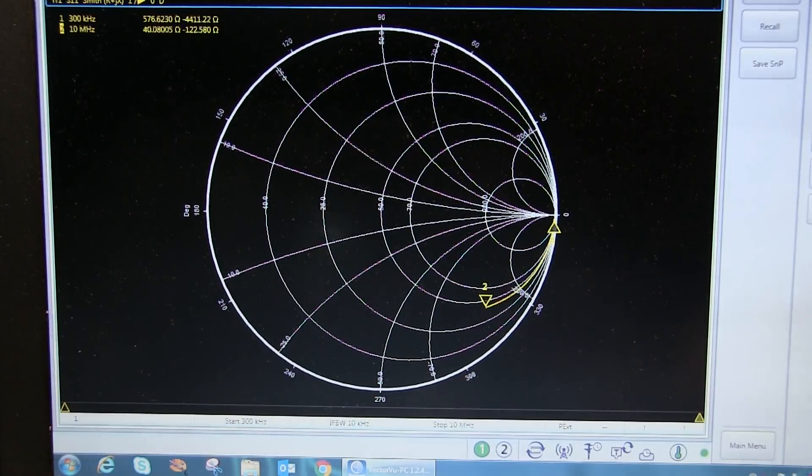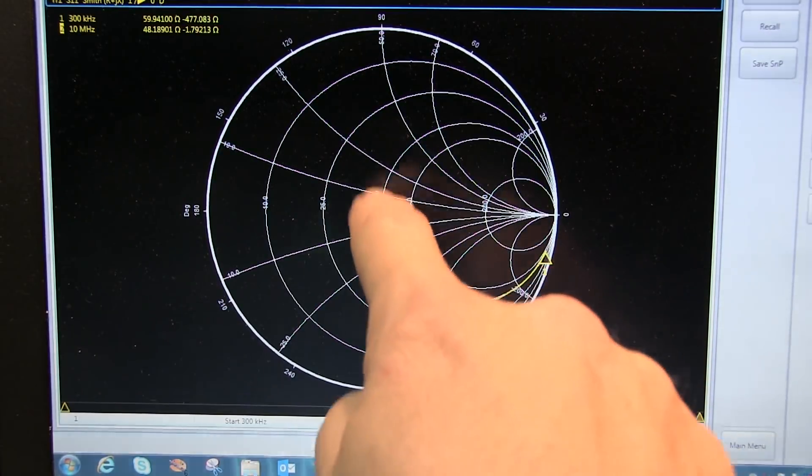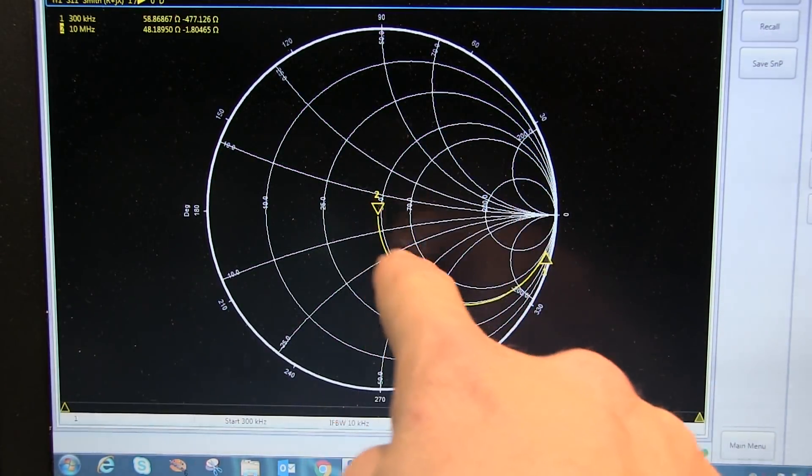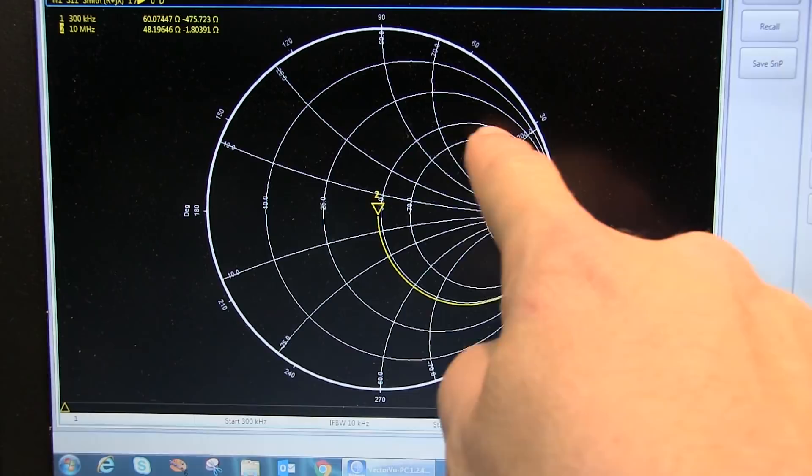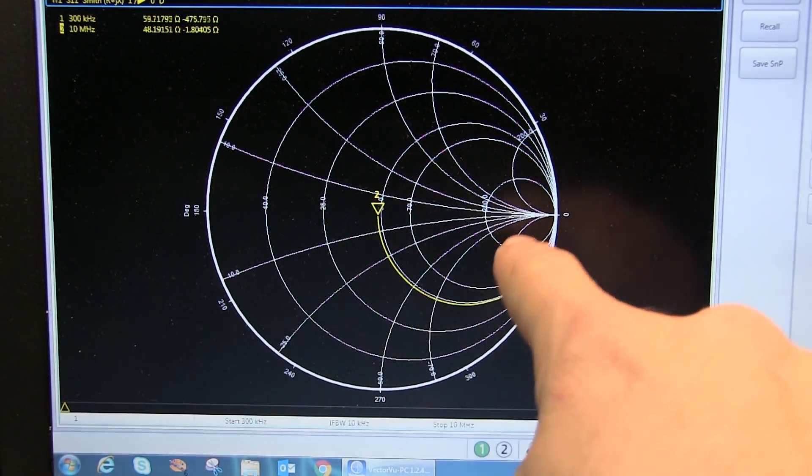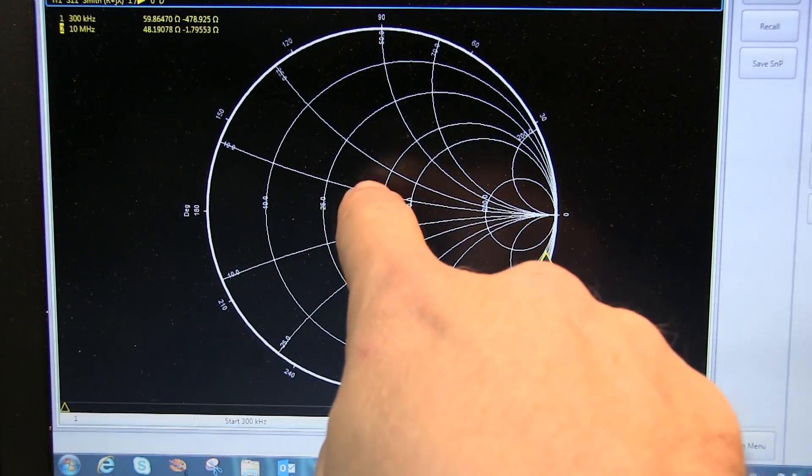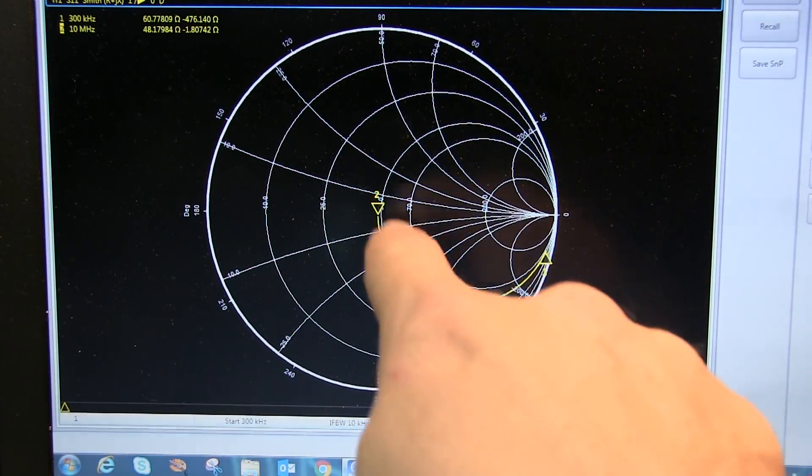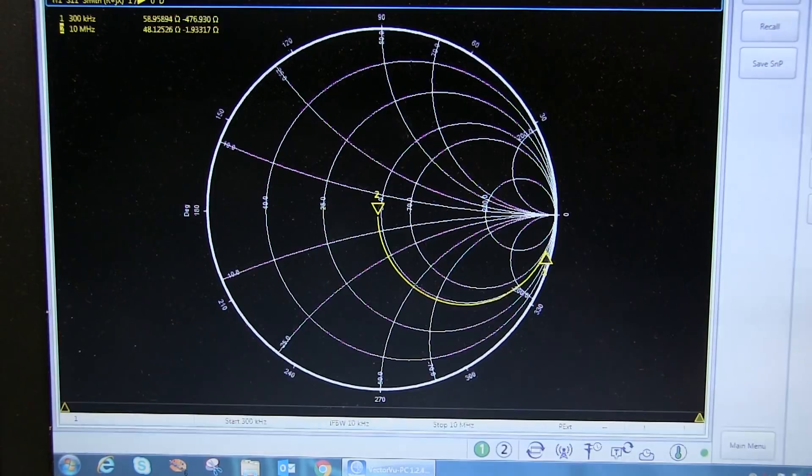As I turn the capacitance up, we can see ourselves tracing across, or tracing around, and notice that we're essentially tracing around the constant resistance circle, in this case the 50 ohm constant resistance circle, because we're not changing the 50 ohm resistance, we're only changing the series capacitance, so we're only changing the jX portion of the R plus jX equation. So it's very easy to see how we're tracing ourselves around that constant resistance circle.